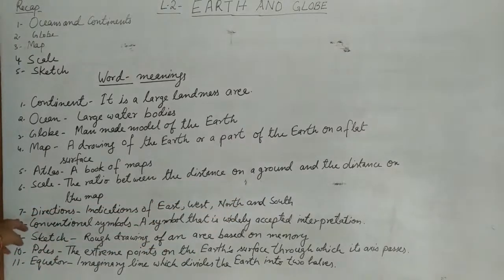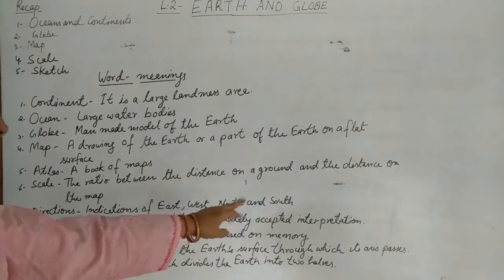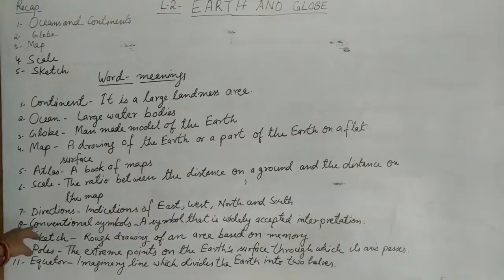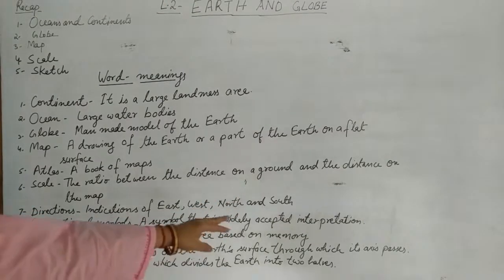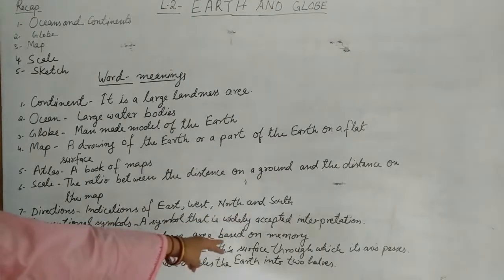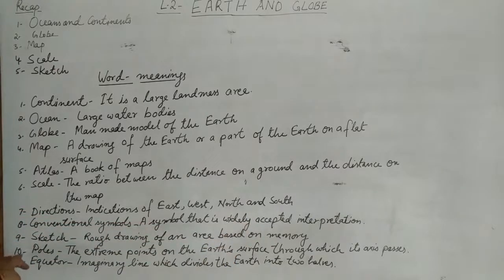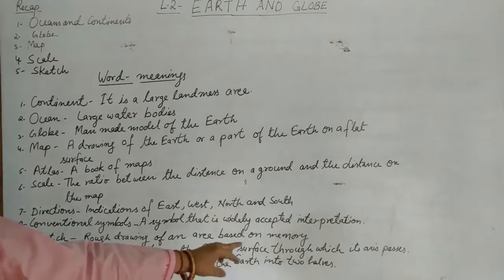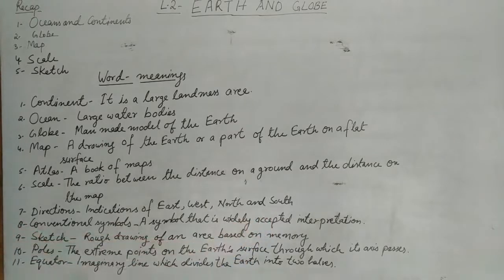Number five: atlas - a group of maps. Number six: scale - the ratio between the distance on the ground and the distance on the map. Number seven: direction - indication of east, west, north and south. Number eight: conventional symbols - a symbol that is widely accepted interpretation. Number nine is sketch - rough drawing of an area based on memory. Number ten: poles - the extreme points on the earth's surface through which its axis passes. Number eleven: equator - an imaginary line which divides the earth into two halves.